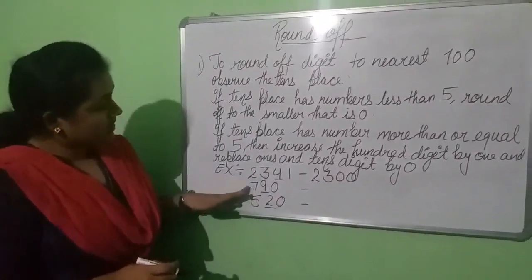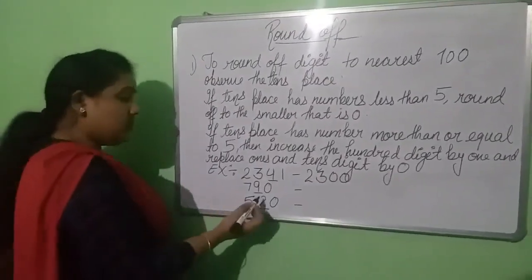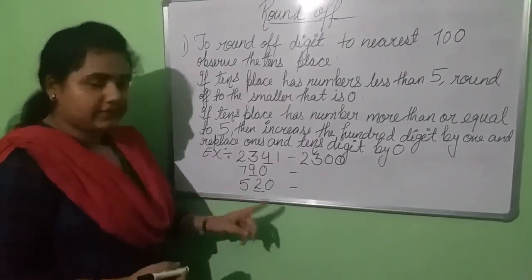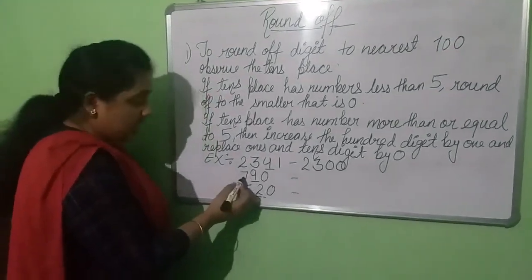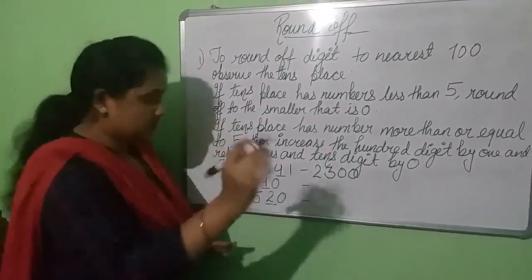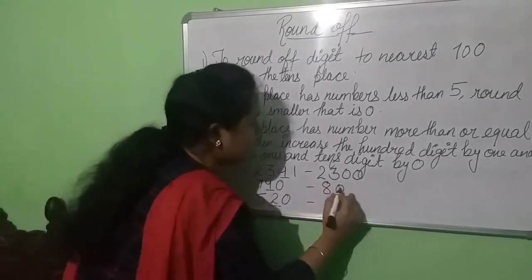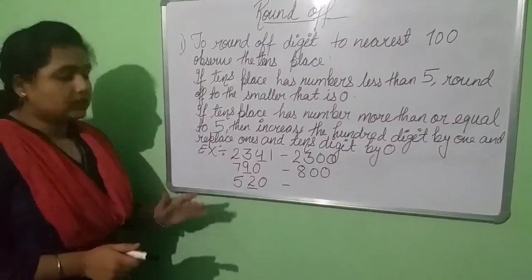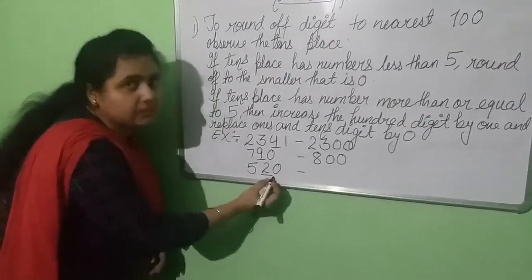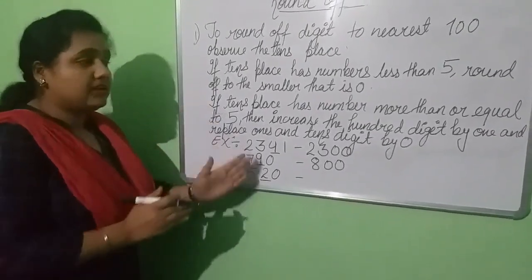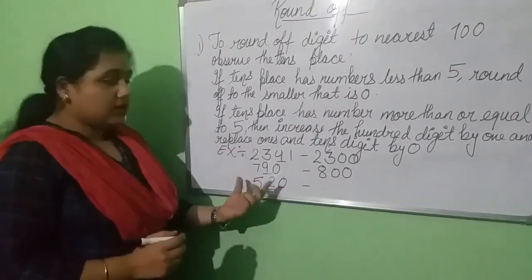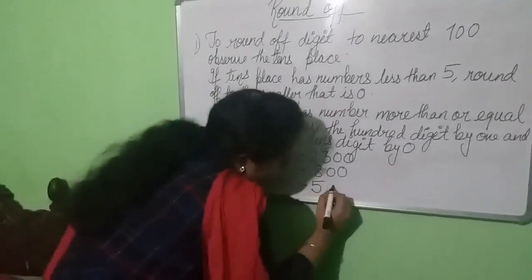The second number is 790. We have 9 at the 10's place, which is more than 5. So we are going to add 1 at the 100's place and replace the 10's and 1's place with 0, giving us 800. The third number is 520. We have 2 at the 10's place, which is less than 5, so we write 0 at the 10's and 1's place. After rounding, we get 500.